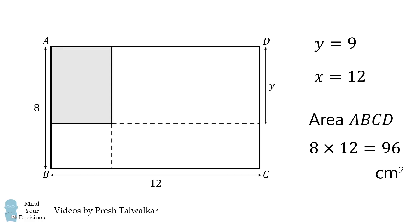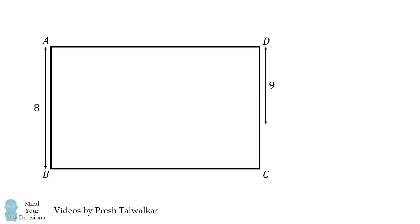Go back to the original diagram, and notice that a portion of CD is equal to y, which means a portion of CD is equal to 9. So, we have a very strange shape.